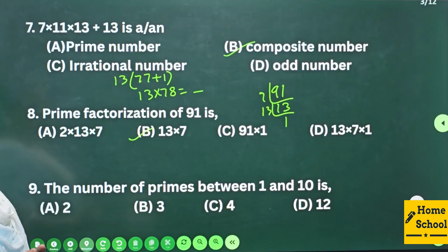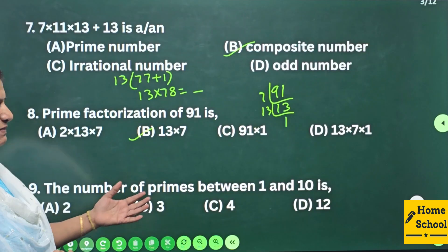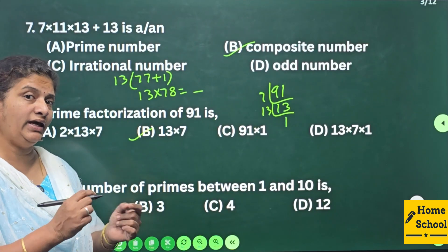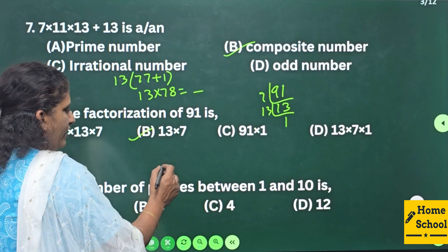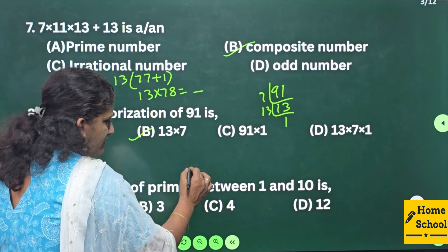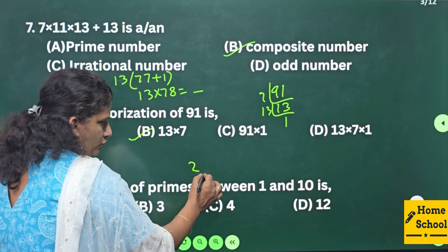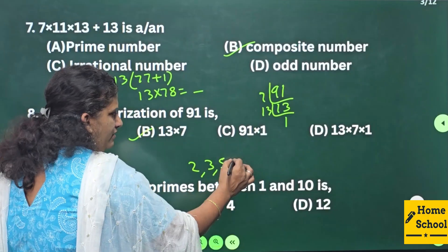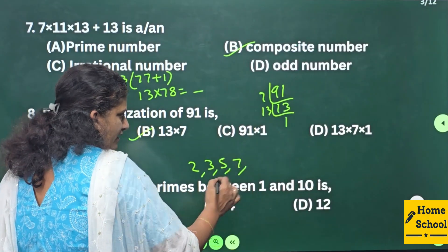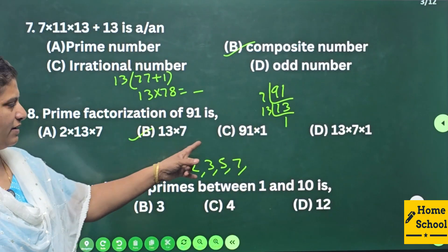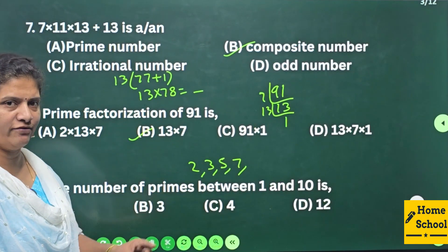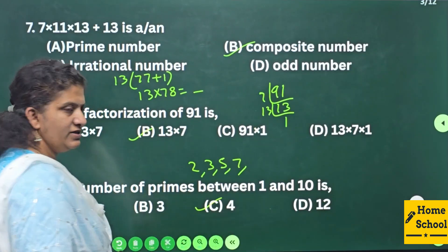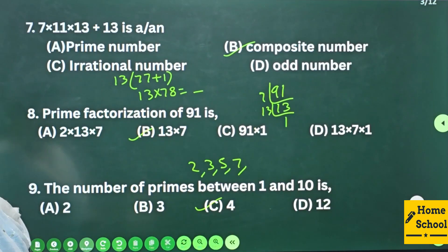Question 9: The number of primes between 1 and 10. The prime numbers between 1 and 10 are 2, 3, 5, and 7. That's 4 prime numbers, so your answer is option C — 4.